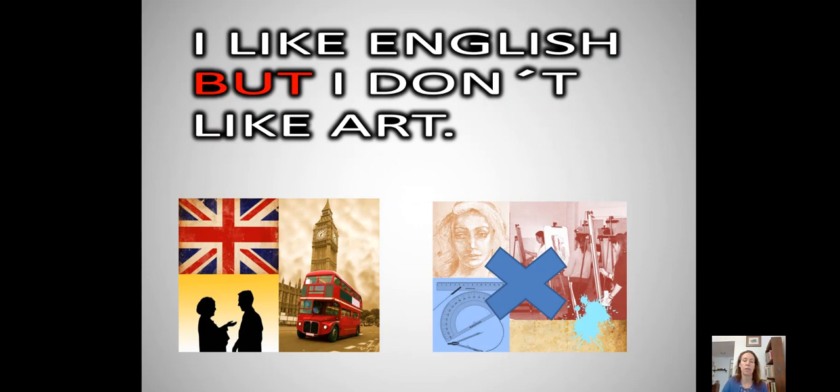Ahora vamos a aprender una forma de unir lo que me gusta y lo que no me gusta. Vieron que hasta ahora vimos I like science. I don't like art. Pero ahora vamos a unir todo eso en una sola oración. Usando la palabra que acá está en rojo, que es but. Pero. Miren cómo quedaría esta oración. I like English, but I don't like art. Me gusta inglés, pero no me gusta el arte. Entonces, uní todo en una sola oración. Sin la necesidad de hacer dos oraciones. Utilizando el but. Ok?